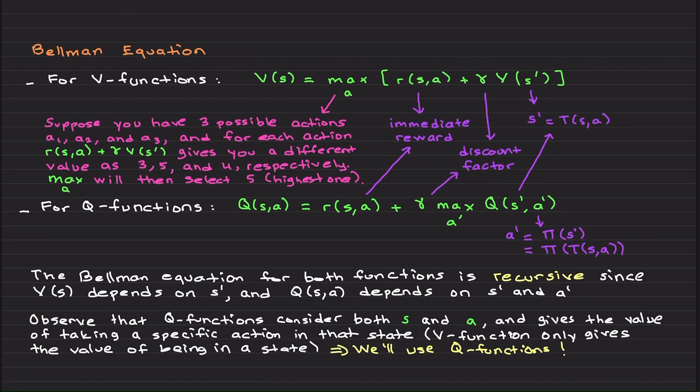Gamma small means quick learning just focusing on immediate rewards. And this is the value function at the next state, and remember the next state is the transition model T(s,a).